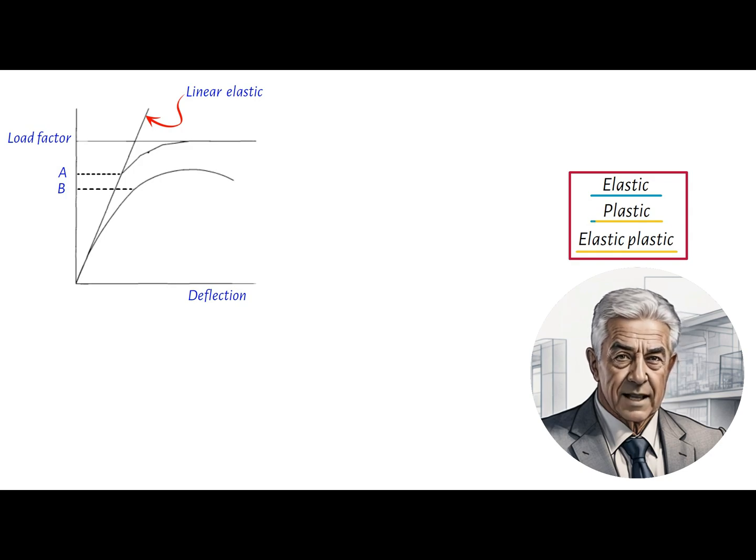Conversely, plastic analysis methods determine the set of plastic hinges that form a collapse mechanism under a given set of loads. Yet, this method has mostly been replaced by programs that perform elastic-plastic analysis.